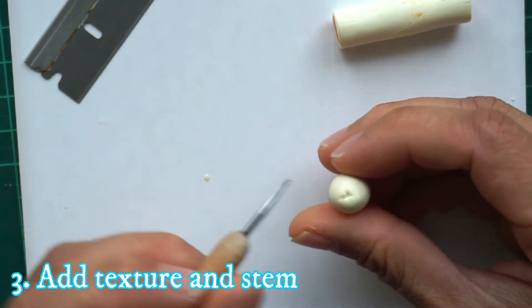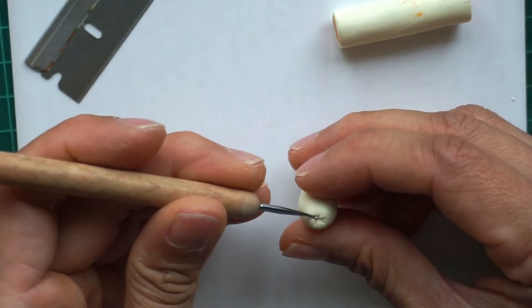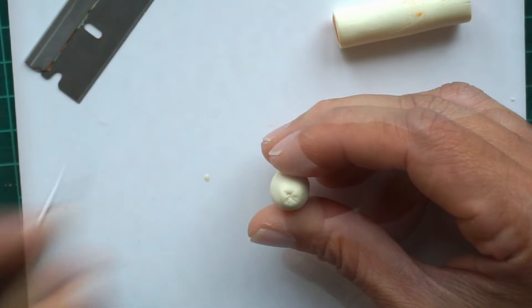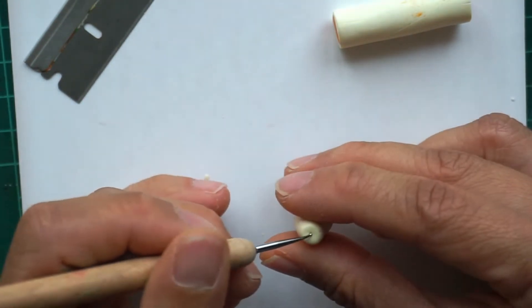Next, create a texture on both ends of the papaya and then using a brown clay attach the stem to the narrow end.